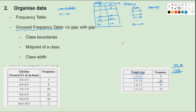There are two types of grouped frequency table, and we need to clearly understand the difference. For the cat weight table, 1.3 appears as both the upper bound of the first group and the start of the second — we call this a no-gap table. However, for the lifetime table, the first group ends at 5.9 and the second group starts at 6.0, not 5.9. This is called a grouped frequency table with gap.